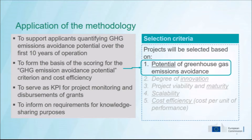The greenhouse gas emission avoidance potential will serve as a basis for disbursement of the grants and for monitoring of the projects. Any assumptions taken during the calculation of the emission avoidance potential during evaluation will remain the same for the purposes of disbursement. We will look at the greenhouse gas emission avoidance potential as evaluated and validated by the external evaluators. Once the projects have entered into operation, they will also have to provide further details on the actual greenhouse gas emission avoidance.